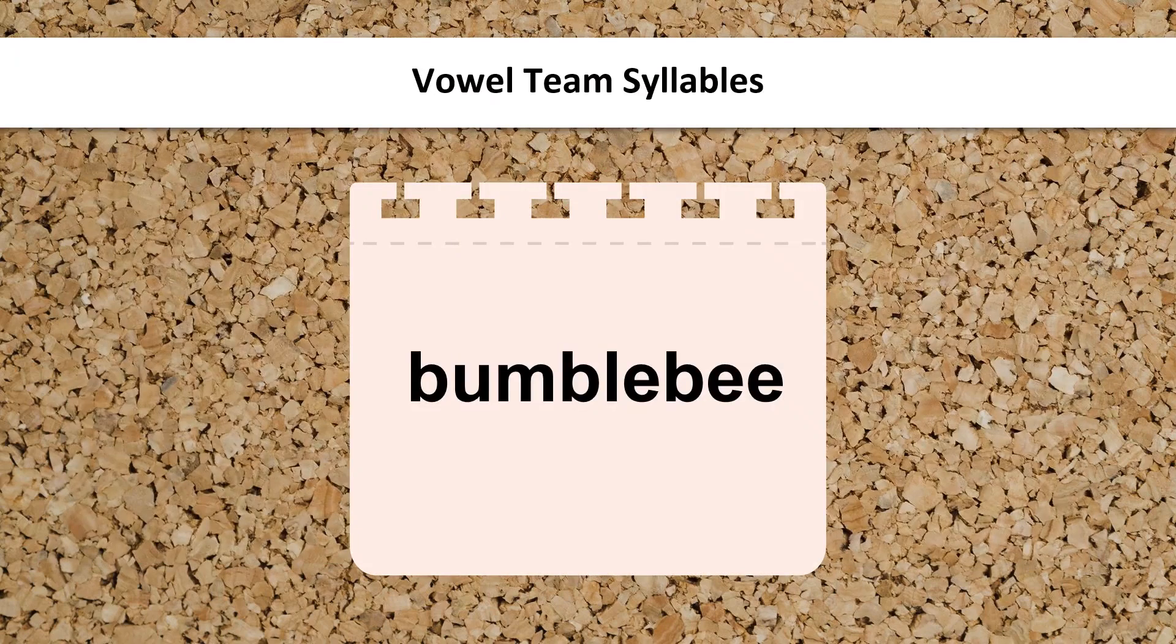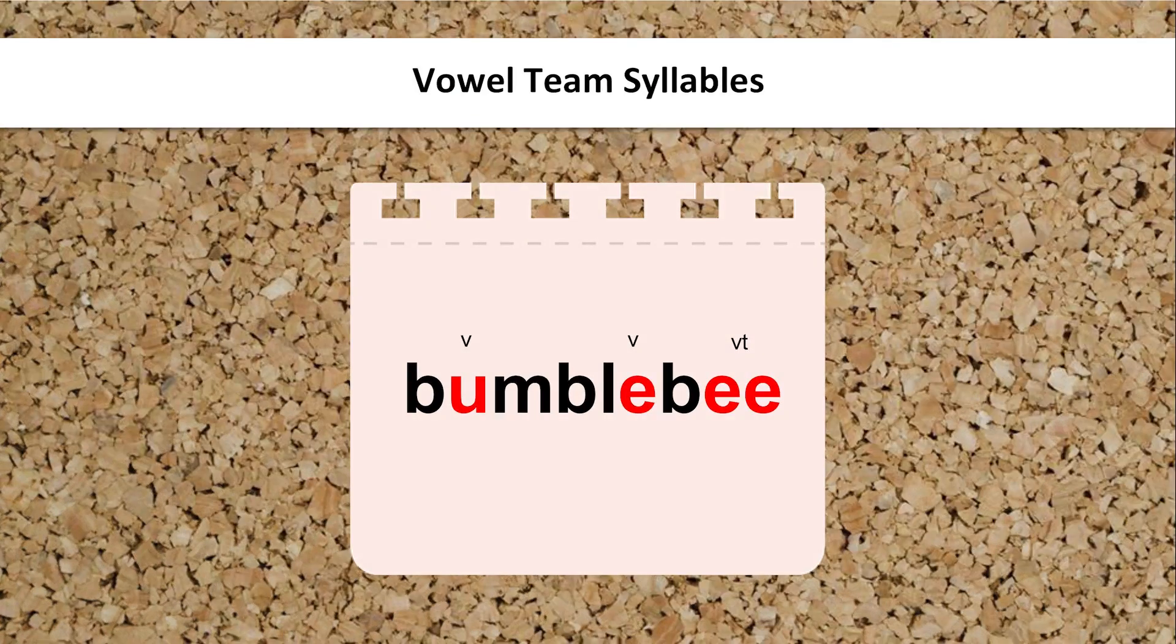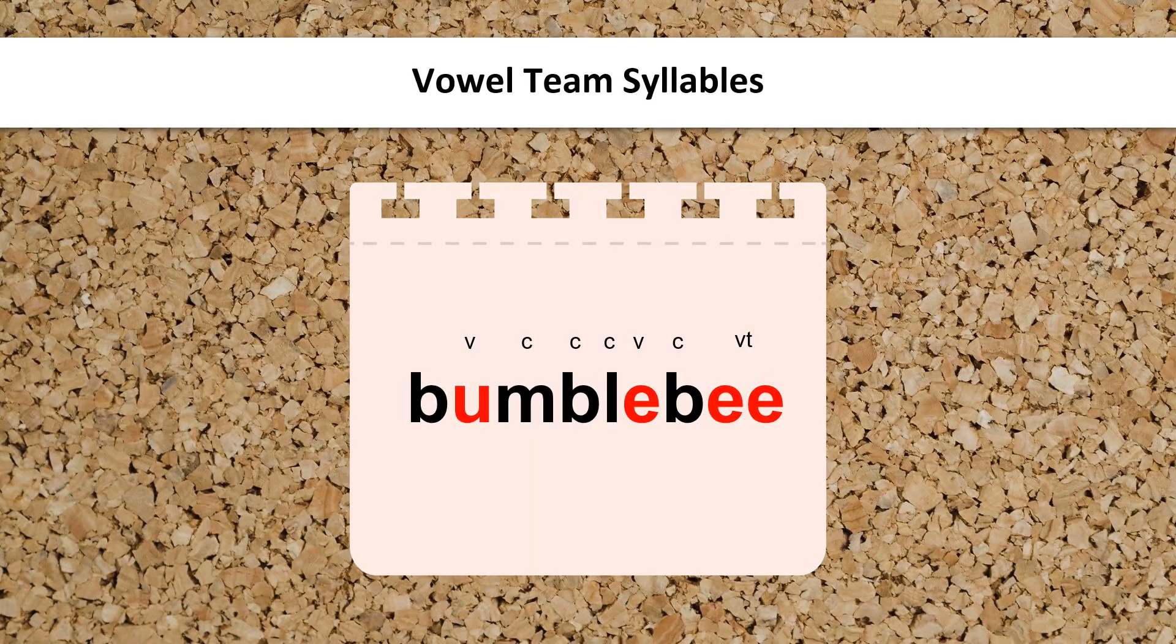Let's take a look at this word. First, code the vowels. Next, code the consonants between the vowels. Now you can divide the syllables.